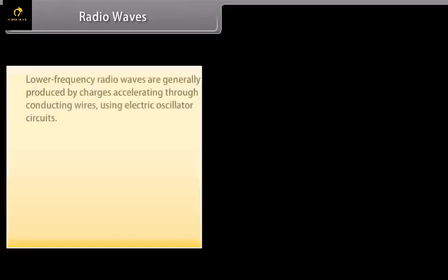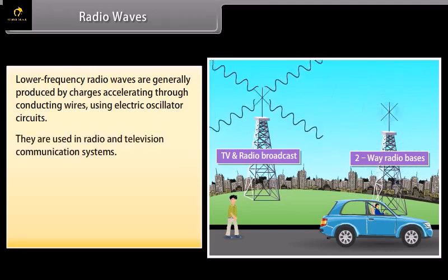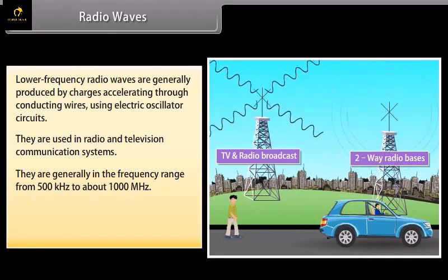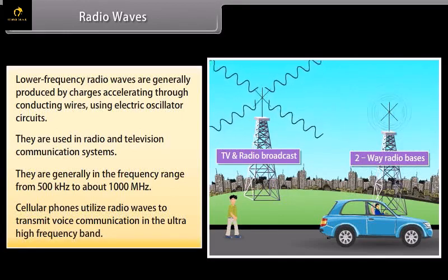Radio waves. Lower frequency radio waves are generally produced by charges accelerating through conducting wires using electric oscillator circuits. They are used in radio and television communication systems. They are generally in the frequency range from 500 kHz to about 1000 MHz. Cellular phones utilize radio waves to transmit voice communication in the ultra-high frequency band.